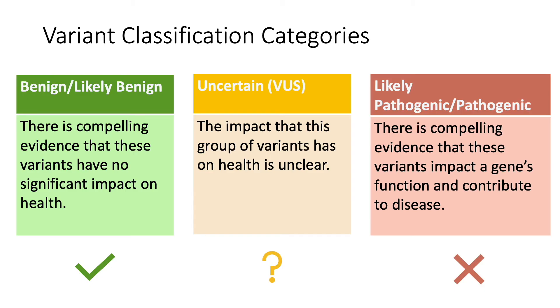Classifications fall into three main buckets: benign, uncertain, and pathogenic. Benign means that the copy number or sequence variant is not believed to impact a gene's function or independently affect health.